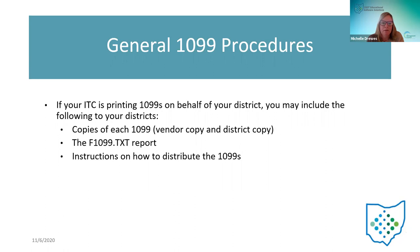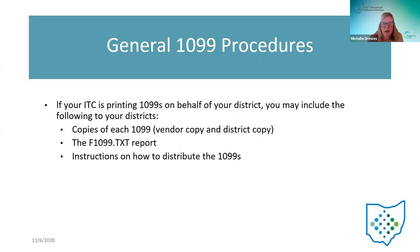If you are printing — and I believe all of you are printing your 1099s on behalf of your districts — some things you could include: a copy of the F 1099 report, obviously the pressure-sealed ready-to-go 1099s, and a vendor copy which you can print on regular 8.5 x 11 paper so that the districts have their copy. Also include instructions on how to distribute the 1099s — once they get into the district's hands, what do they do with them?